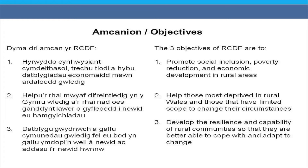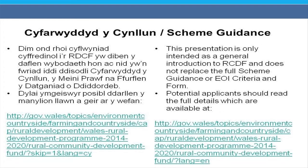The fund aims to help those most deprived in rural Wales and those who have limited scope to change their own circumstances, and to develop the resilience and capability of rural communities so that they are better able to cope with and adapt to change. The full scheme guidance and expression of interest criteria and application form can be found on the Welsh Government's website. This presentation doesn't replace the main scheme documents.